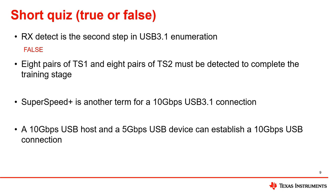Two: eight pairs of TS1 and eight pairs of TS2 must be detected to complete the training stage. This is true. Three: SuperSpeed Plus is another term for a 10 gigabits per second USB 3.1 connection. This is also true.